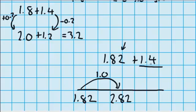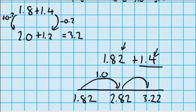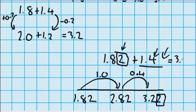Now I've just got these 4 tenths to join on. Adding 1 tenth takes me to 2.92, another tenth to 3.02, another to 3.12, and another to 3.22. That was just by adding those 4 tenths. Notice how the hundredths amount didn't change — that's because I didn't have any hundredths to add to it. So 1.82 plus 1.4 equals 3.22, or 3 wholes, 2 tenths and 2 hundredths.